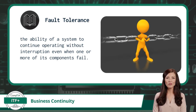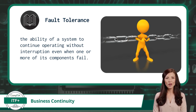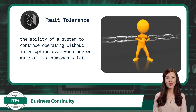The first thing we can do to achieve business continuity is to avoid a complete failure of any business function. This is achieved through fault tolerance. Fault tolerance is the ability of a system to continue operating without interruption even when one or more of its components fail. It ensures that system failures do not result in downtime or data loss due to a single weak link.